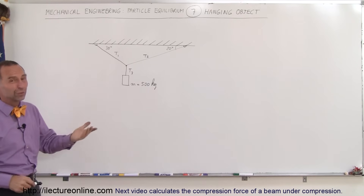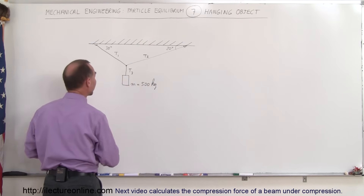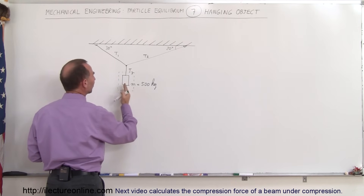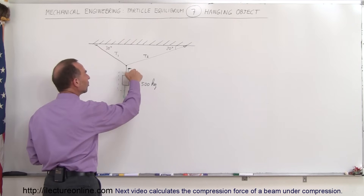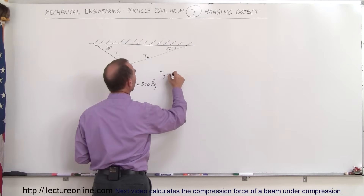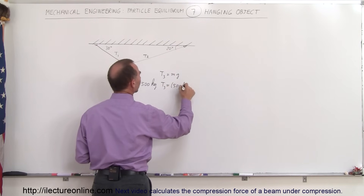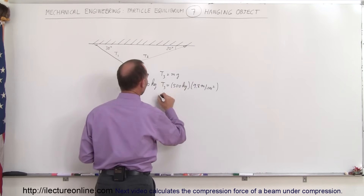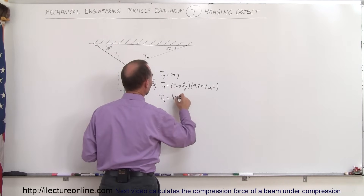Finding the tension in cable three is fairly easy. If we draw a free body diagram, the only two forces acting on the object are the tension pulling it up and the force of gravity pulling it down, mg. This means tension three must equal mg, so T3 = 500 kg × 9.8 m/s² = 4900 newtons.